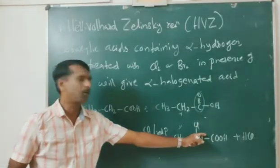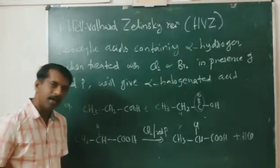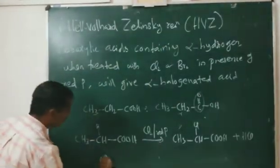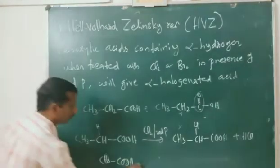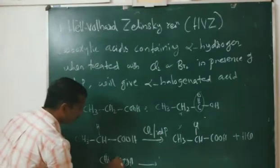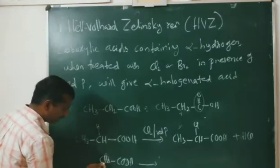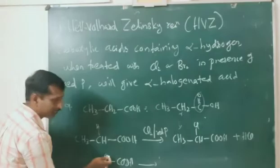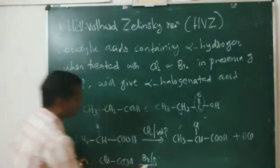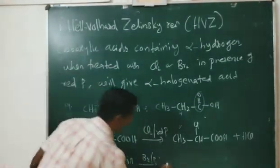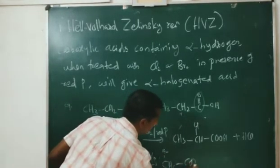We get alpha-chlorinated propanoic acid. This reaction is known as the Hell-Volhard-Zelinsky reaction. For acetic acid, CH₃COOH, this hydrogen is on the alpha carbon. When treated with Br₂ in the presence of red phosphorus, one of the alpha hydrogen atoms is replaced and we get CH₂Br·COOH.